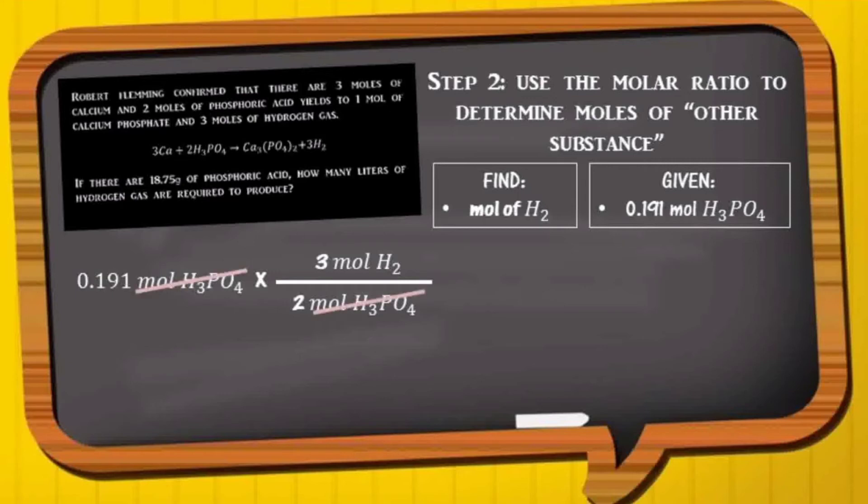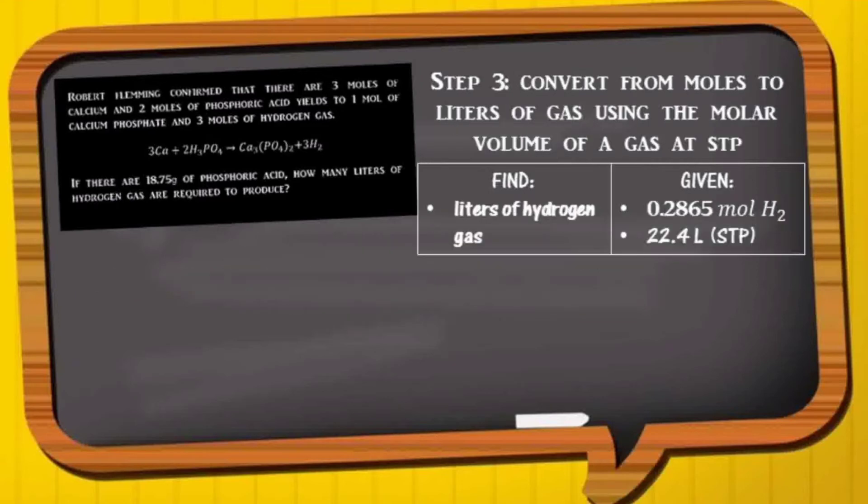And then we cancel. So 0.191 times 3 divided by 2 is equal to 0.2865 moles of hydrogen gas.